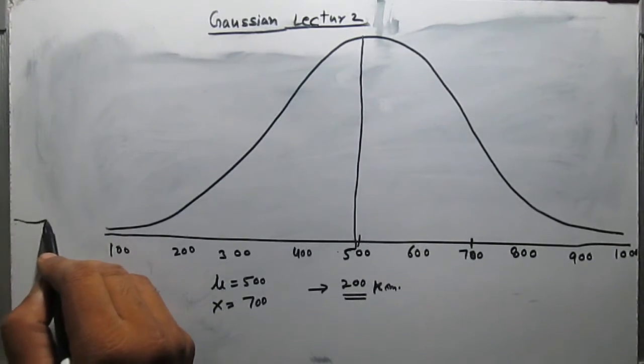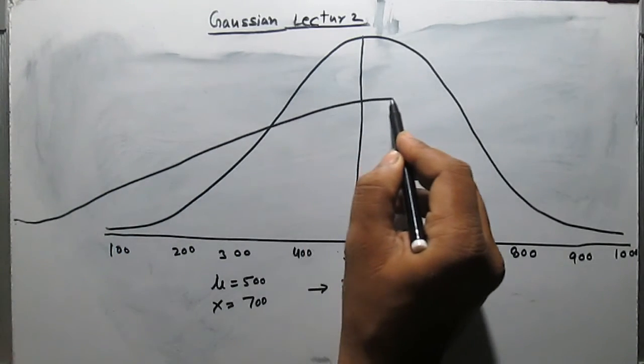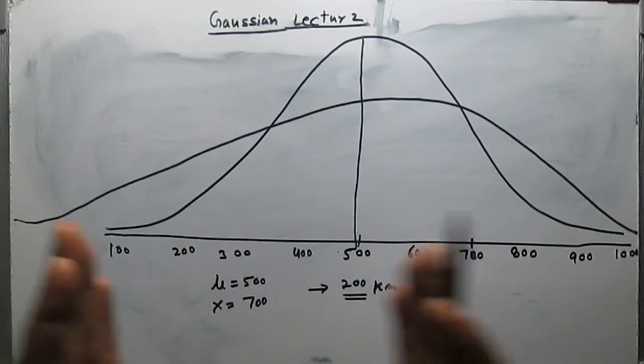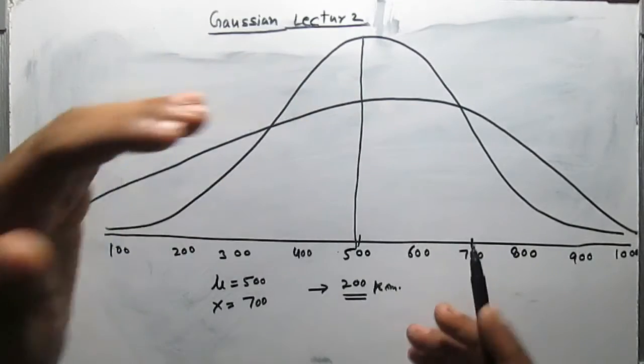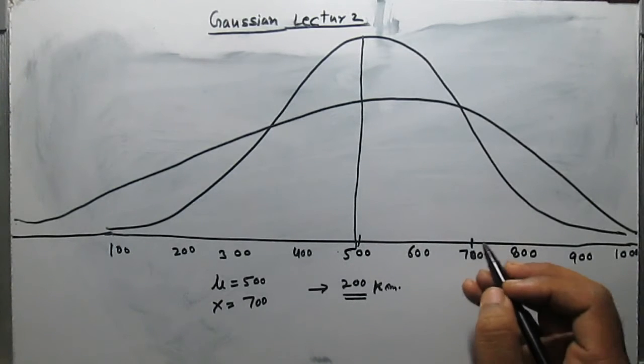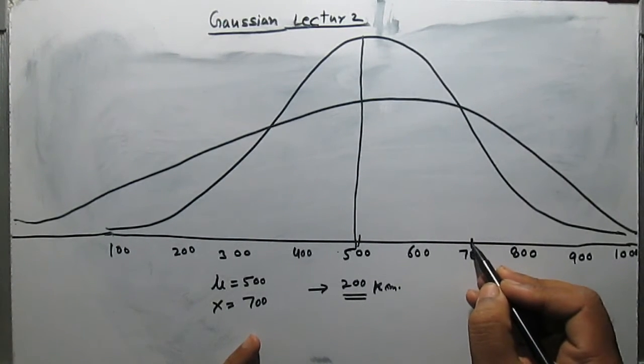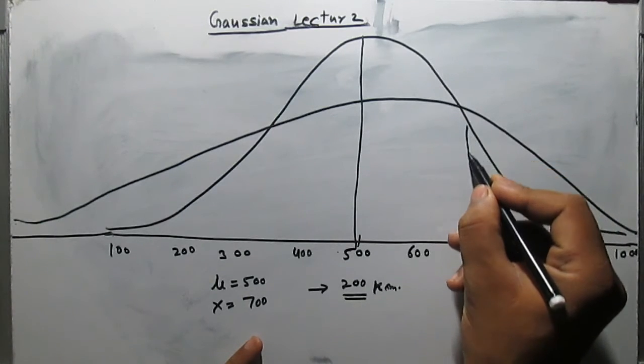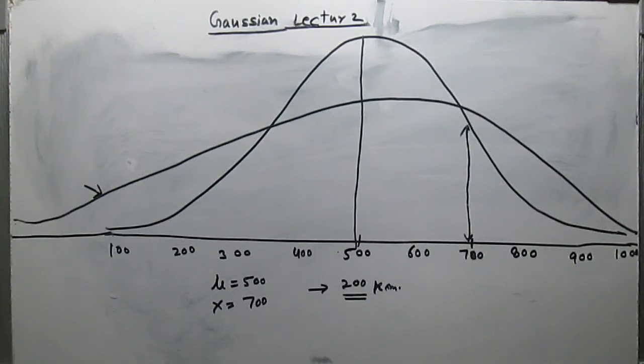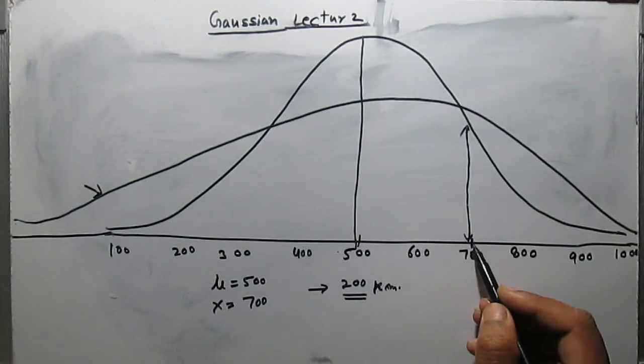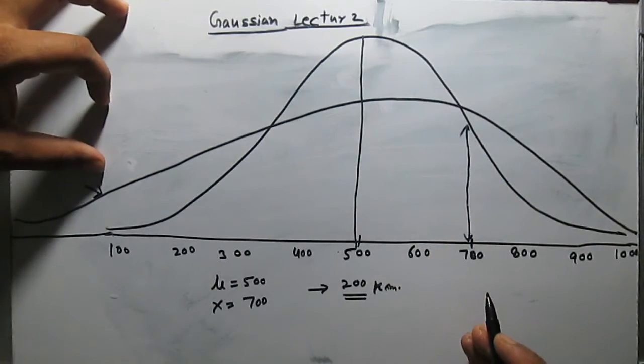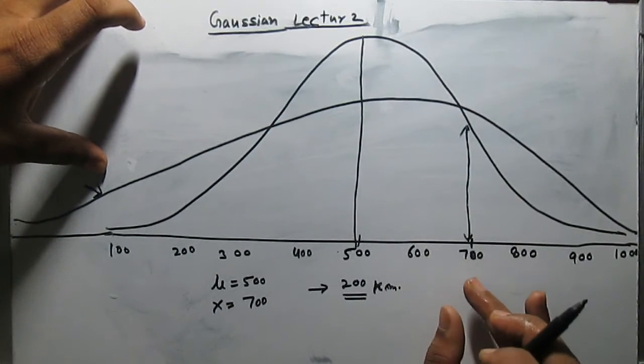Now suppose we change the Gaussian. Since we increase the spread of the Gaussian, the height will automatically decrease to maintain the total area equal to 1. Now here in this case the distance 700 can be parameterized by this height. But if we consider the second Gaussian, we see that the likelihood of 700 is increased. So in this case, in the second Gaussian, the value 700 is more usual than the previous.